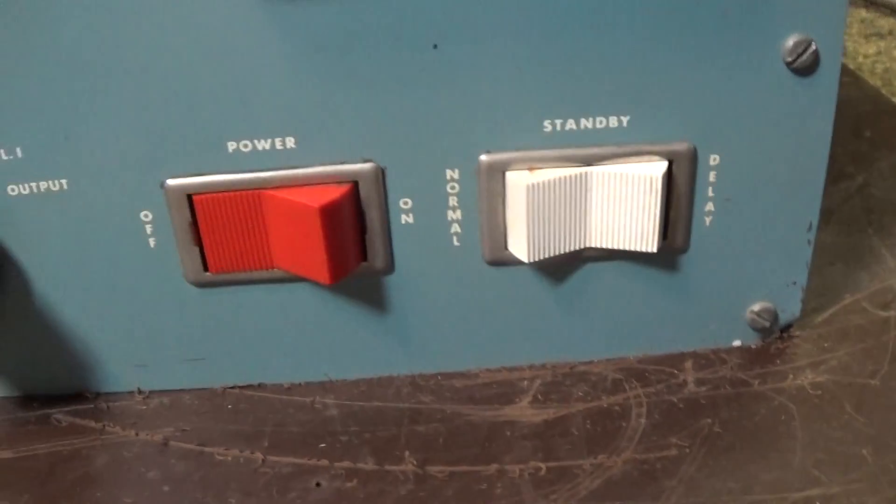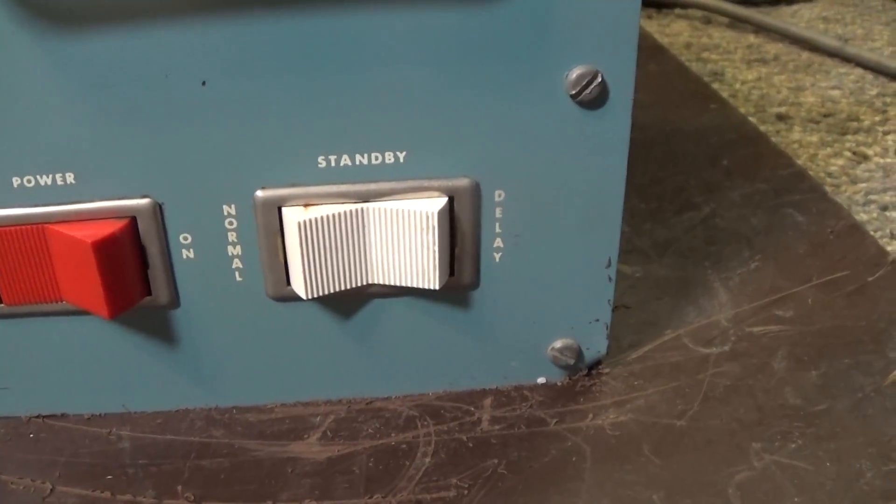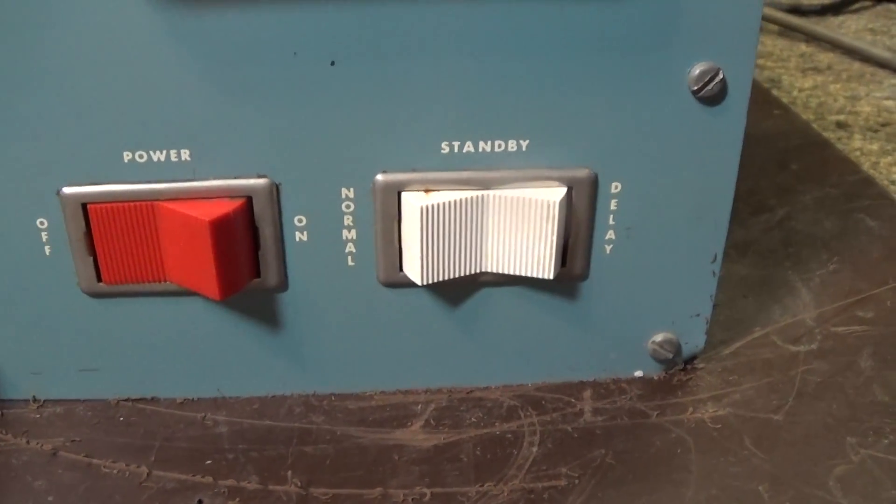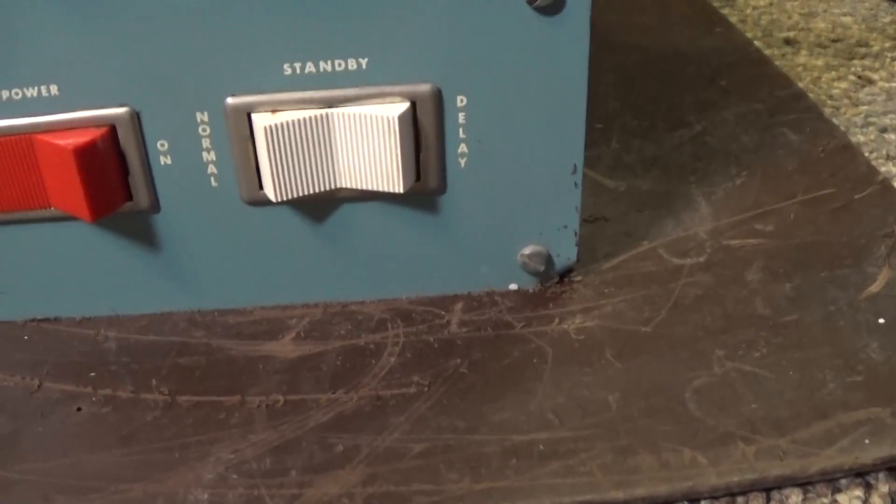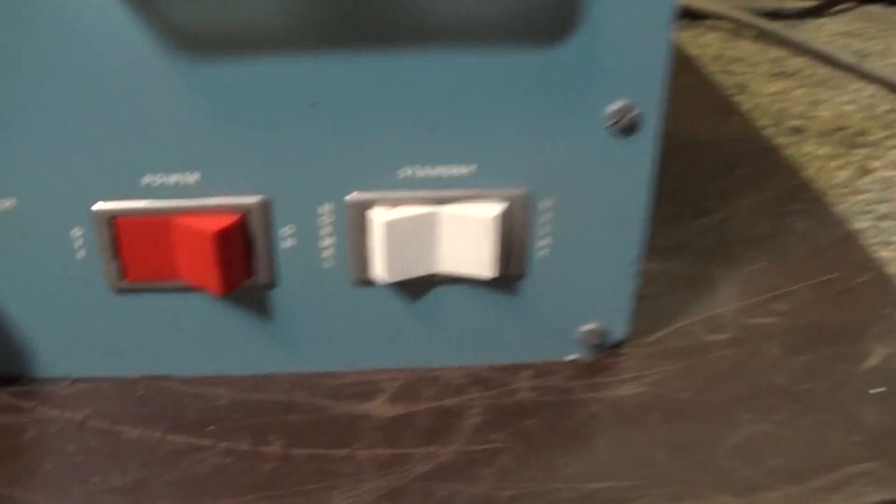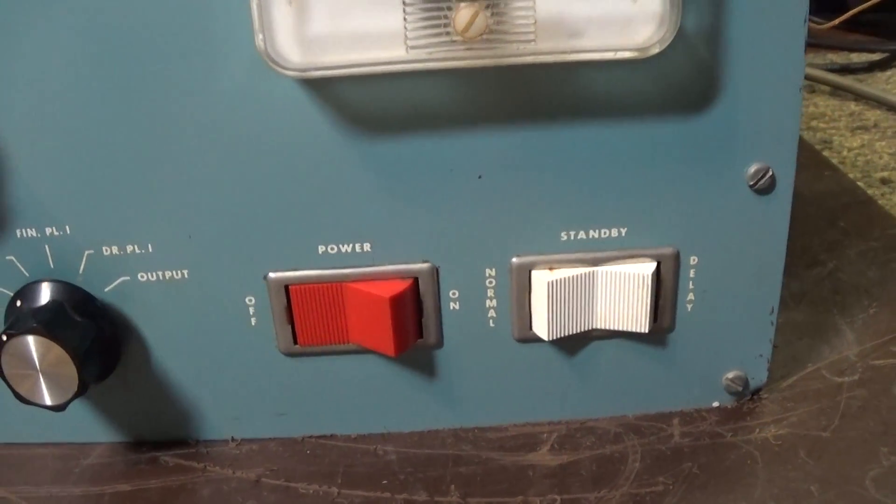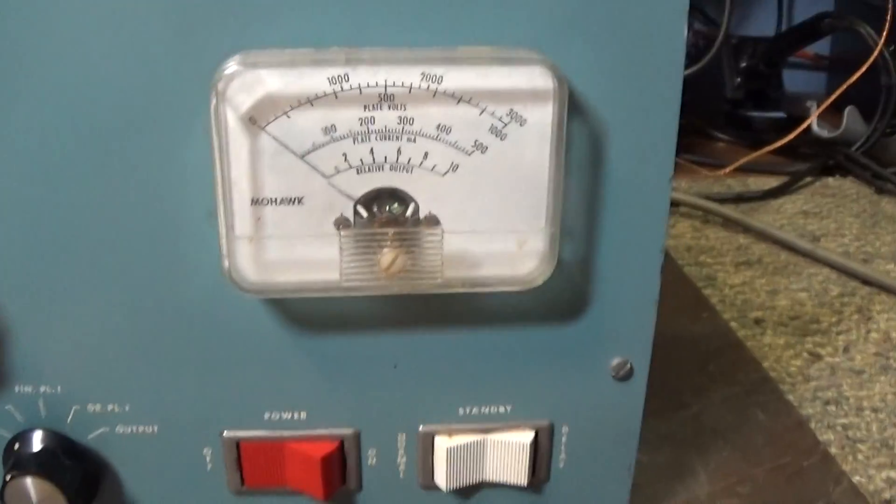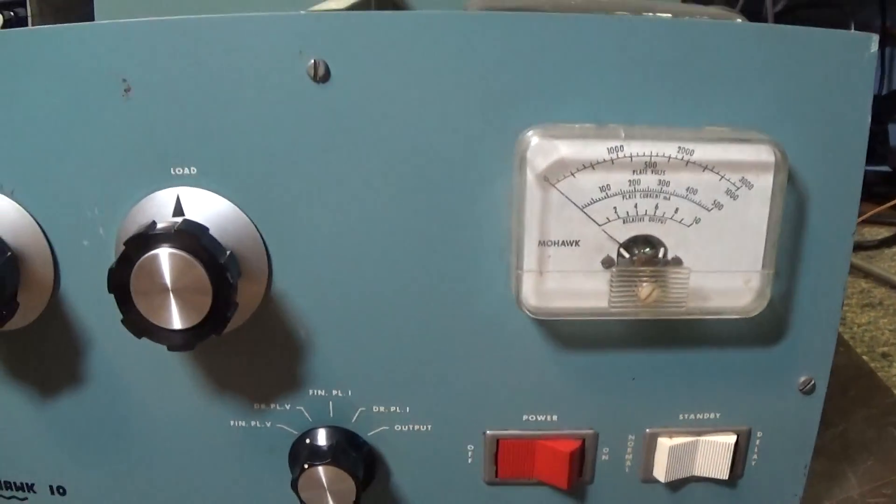And you have standby in the middle, normal to the left which is AM or CW, and to the right delay which is for SSB. All that does is put a little bit of delay on the RF actuated keying relay. In the very back it has a pot where you can dial in as much delay as you want. You can dial in the SSB delay.